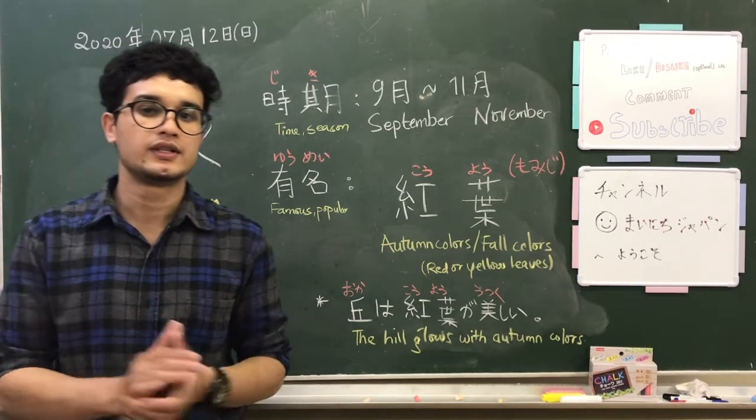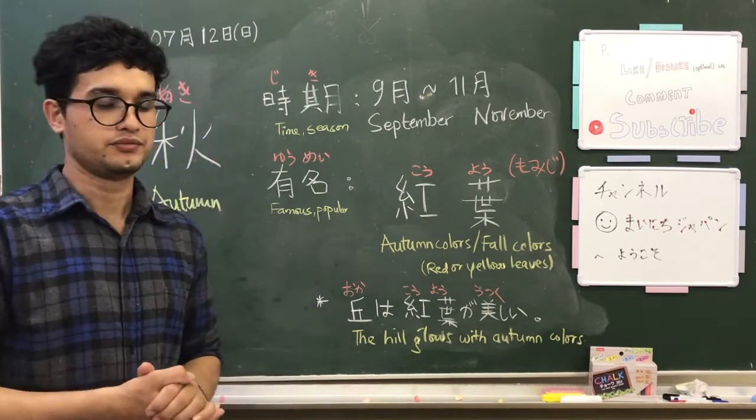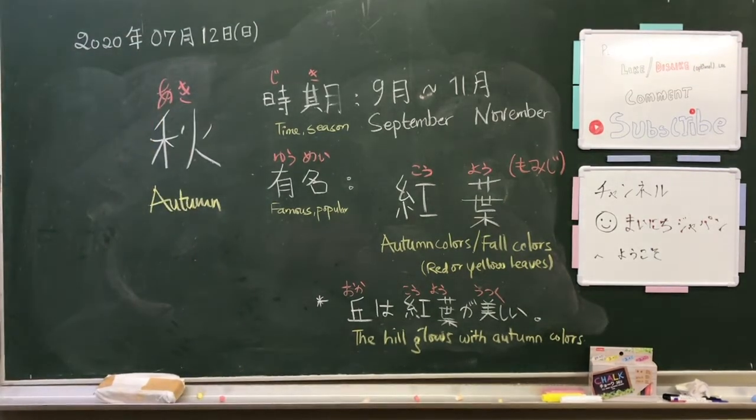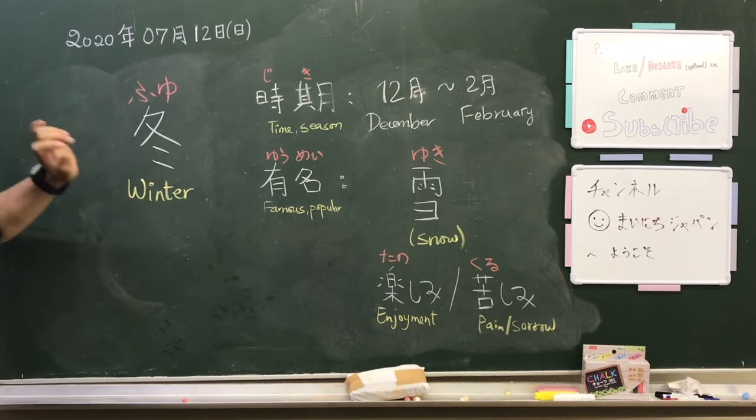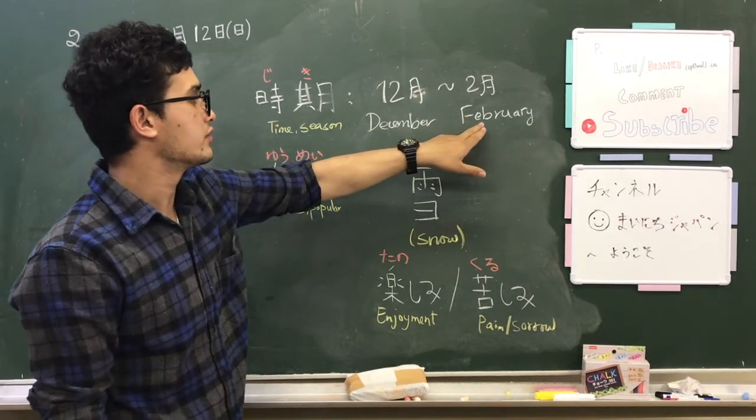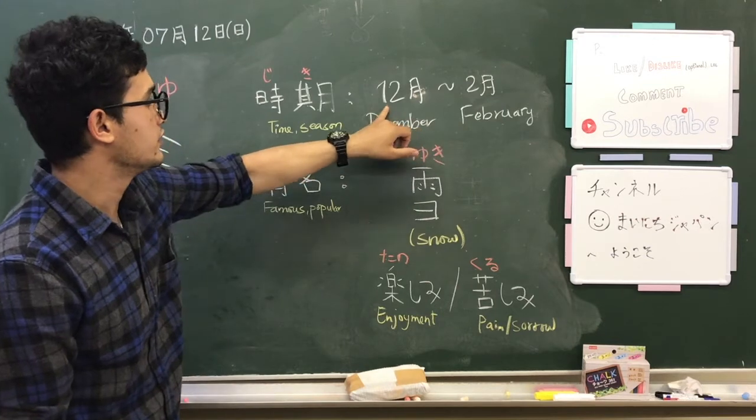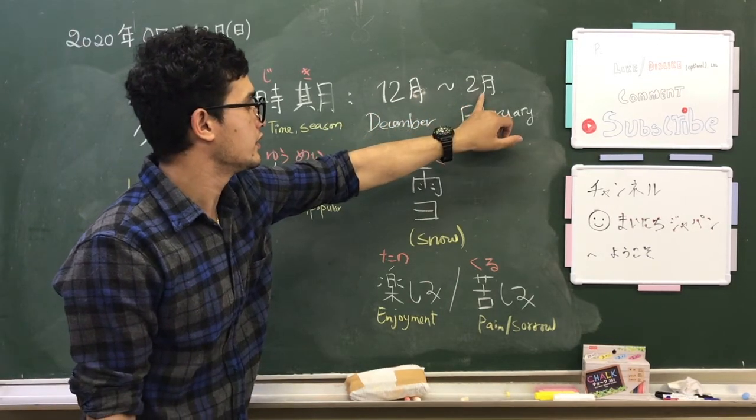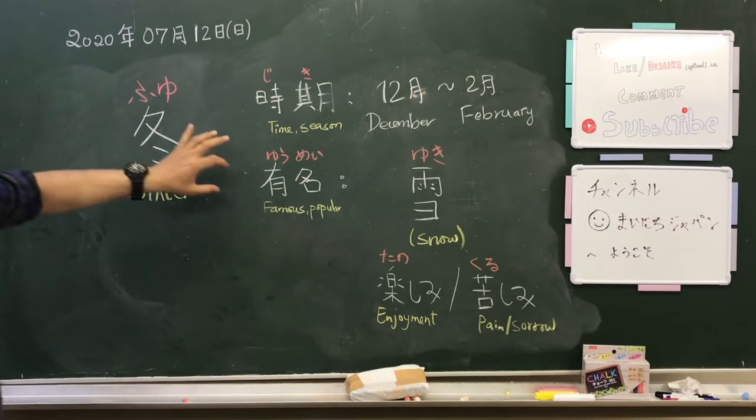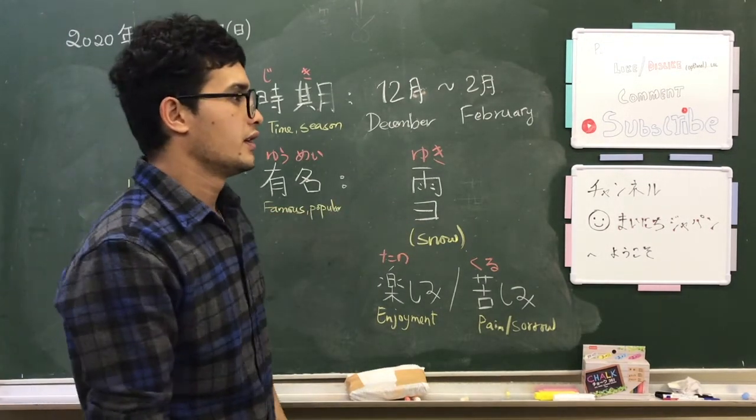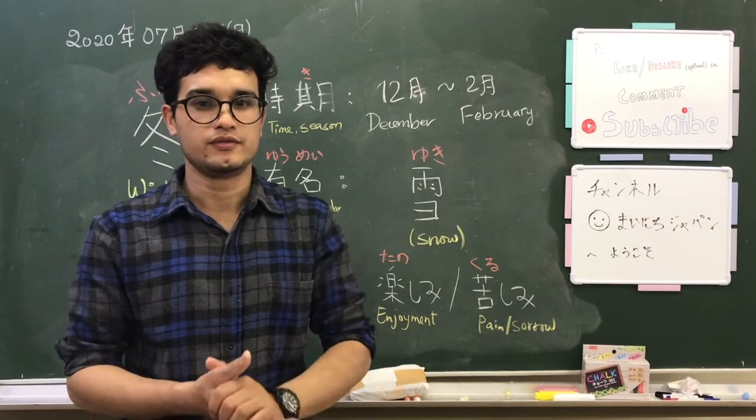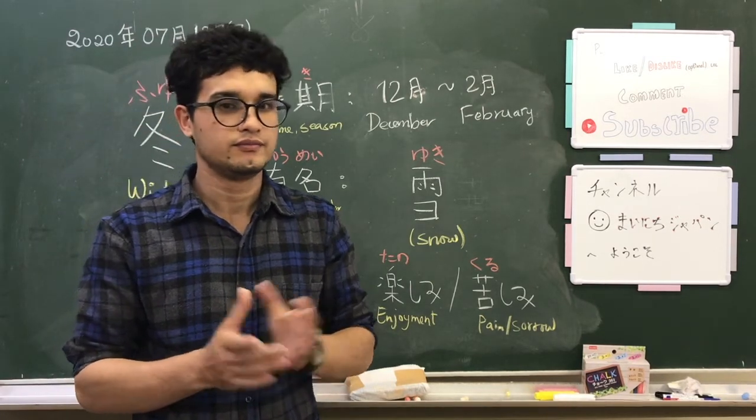Let's go to the last one which is winter or fuyu. It starts in December and goes up to February, or juuni gatsu kara ni gatsu made wa.